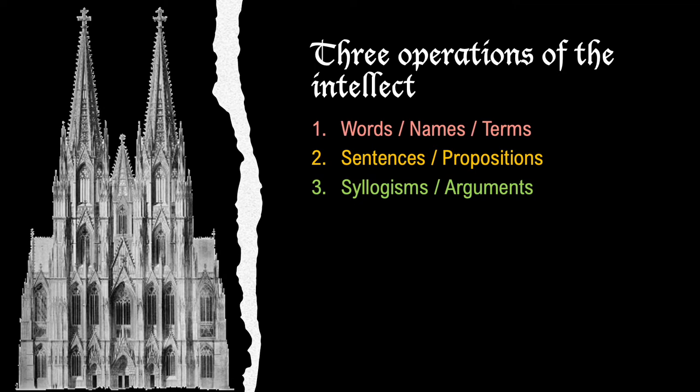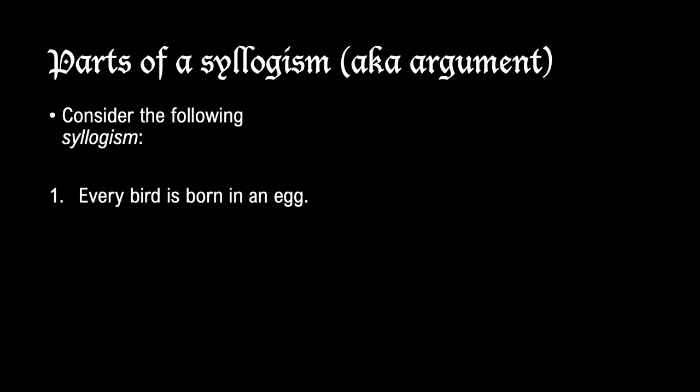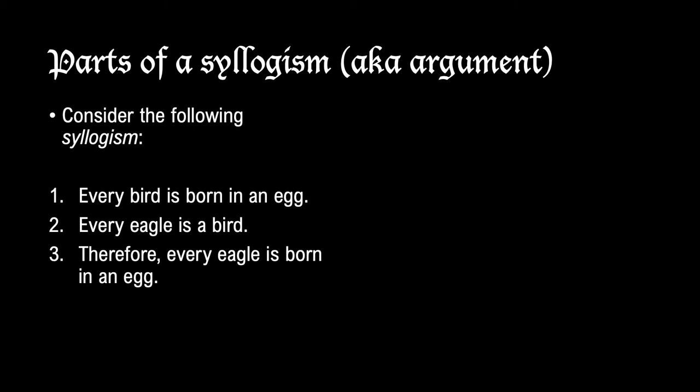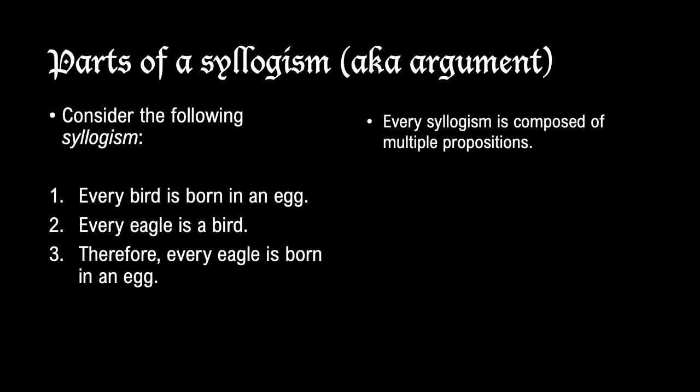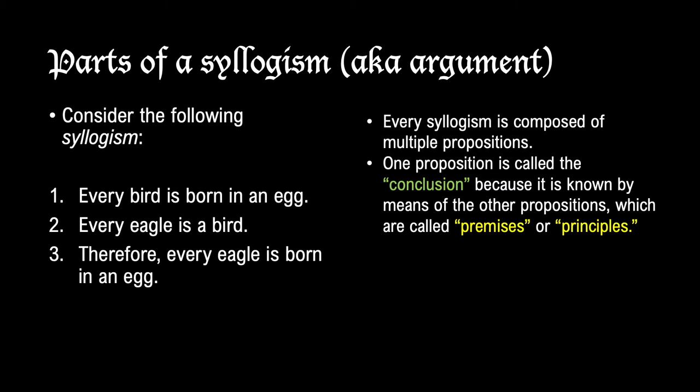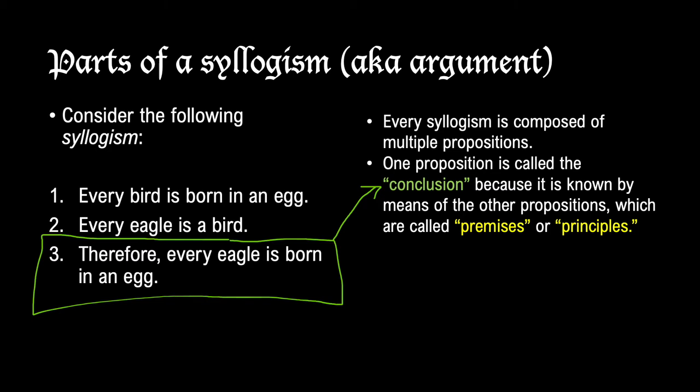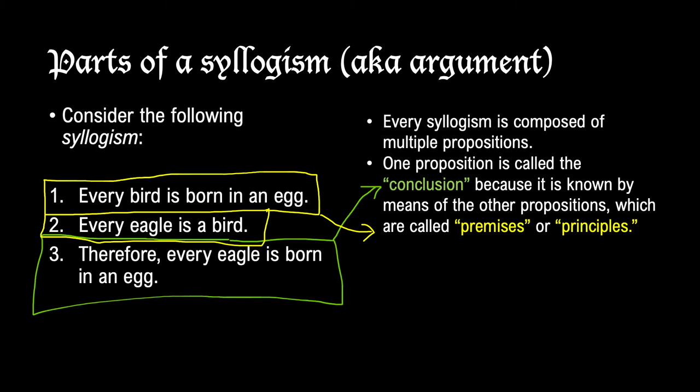Let's look at the parts of a syllogism, also known as an argument. Consider the following syllogism: 1. Every bird is born in an egg. 2. Every eagle is a bird. 3. Therefore, every eagle is born in an egg. Every syllogism is composed of multiple propositions. One proposition is called the conclusion, known by means of other propositions called premises or principles. The conclusion here is 'every eagle is born in an egg,' and the premises are 'every bird is born in an egg' and 'every eagle is a bird.'